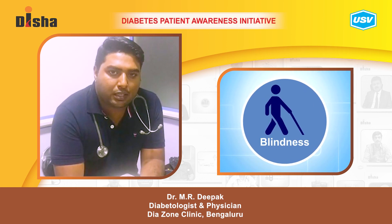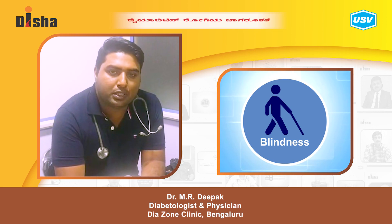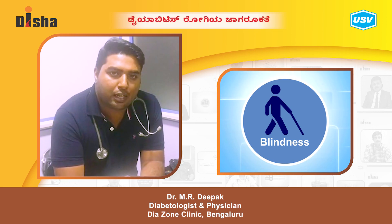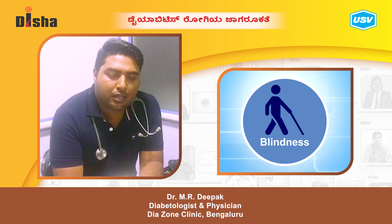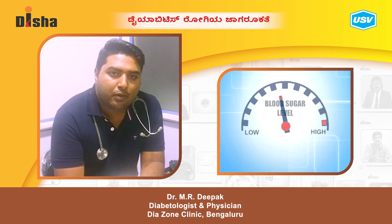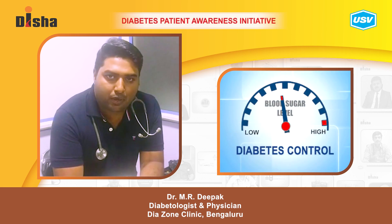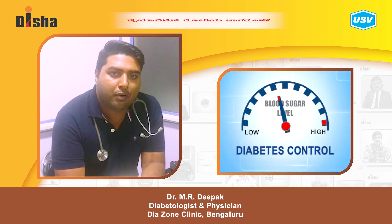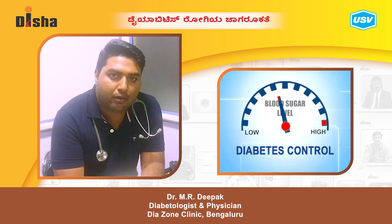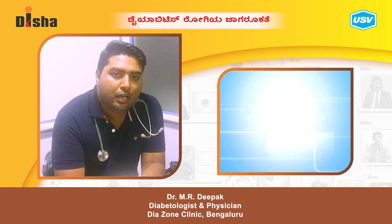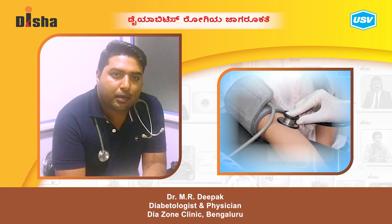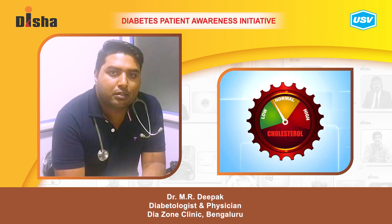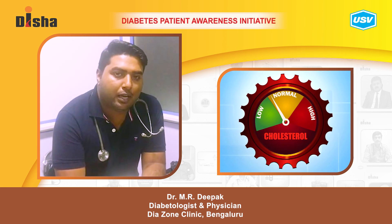There is vision loss, and patients usually get a lot of pain. That is a permanent damage. Why can't we prevent that? It's very simple — you have to control your blood sugar, your blood pressure, and your cholesterol levels.